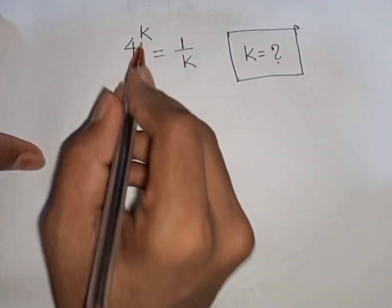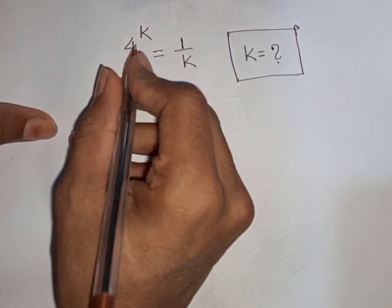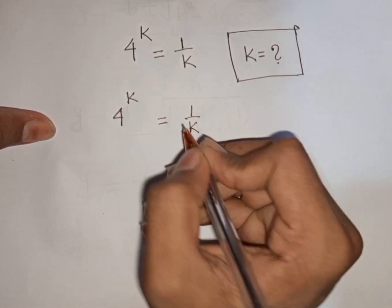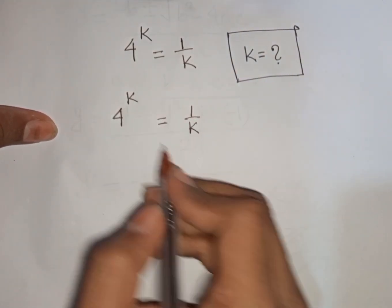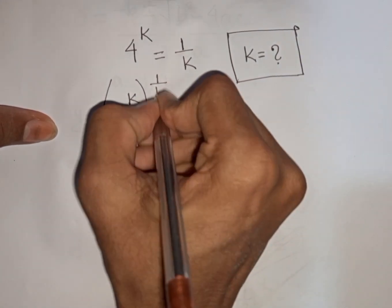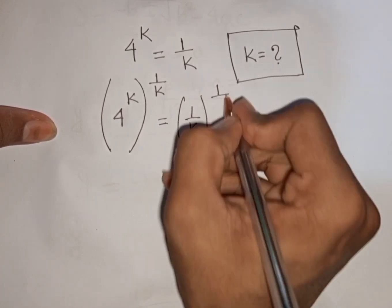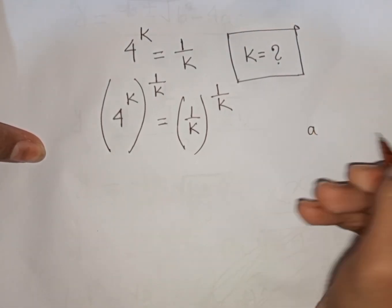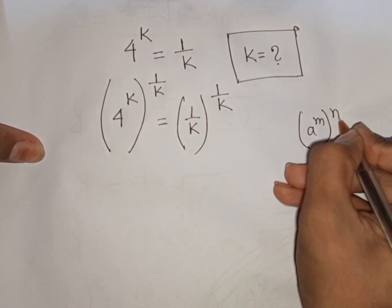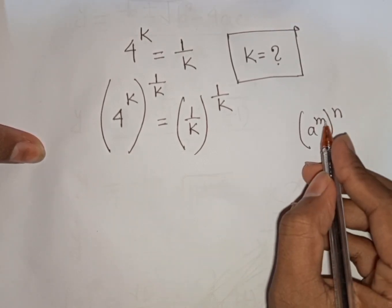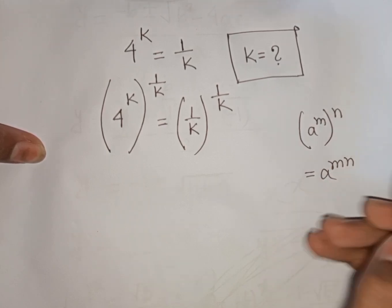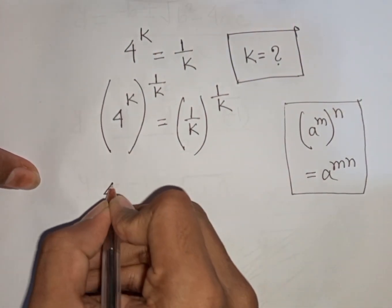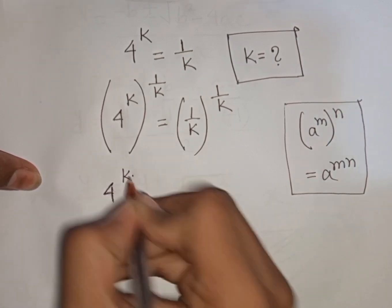Now, how to solve 4^k = 1/k. Find the value of k. We have 4^k = 1/k. We multiply both sides by the power of 1/k. Applying the exponential rule (a^m)^n = a^(m·n), we get 4^(k · 1/k).